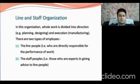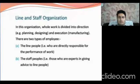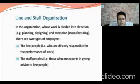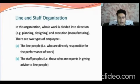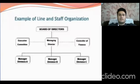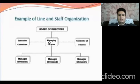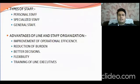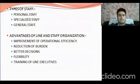Next is line and staff organization. This organization divides direction and execution of work. There are two types of people: line people, who are directly responsible and perform any task; and staff people, who are the experts and provide advice to others. In the diagram, there is a board of directors, an executive committee, a managing director in the middle, three managers working under them, and a controller of finance on the right side. Staff is of three types: personal staff, specialized staff, and general staff.